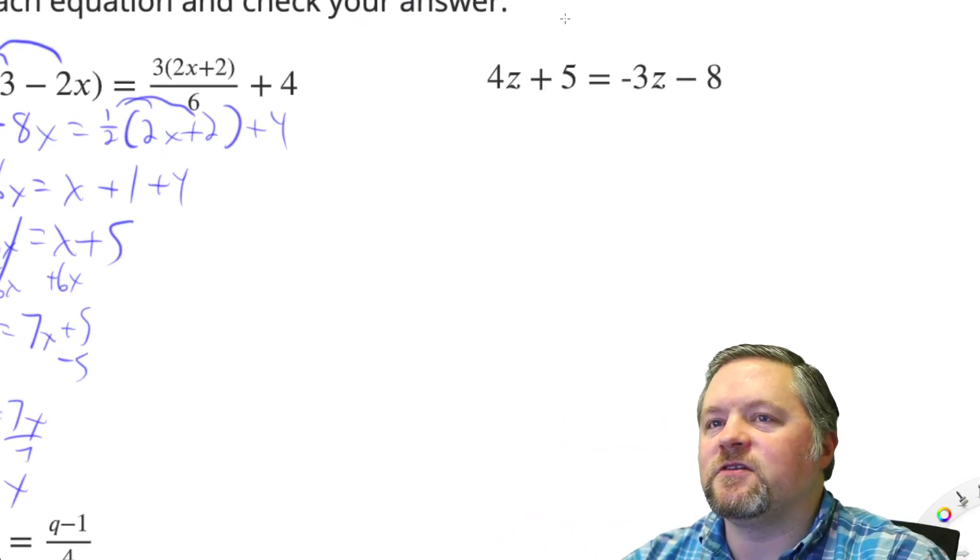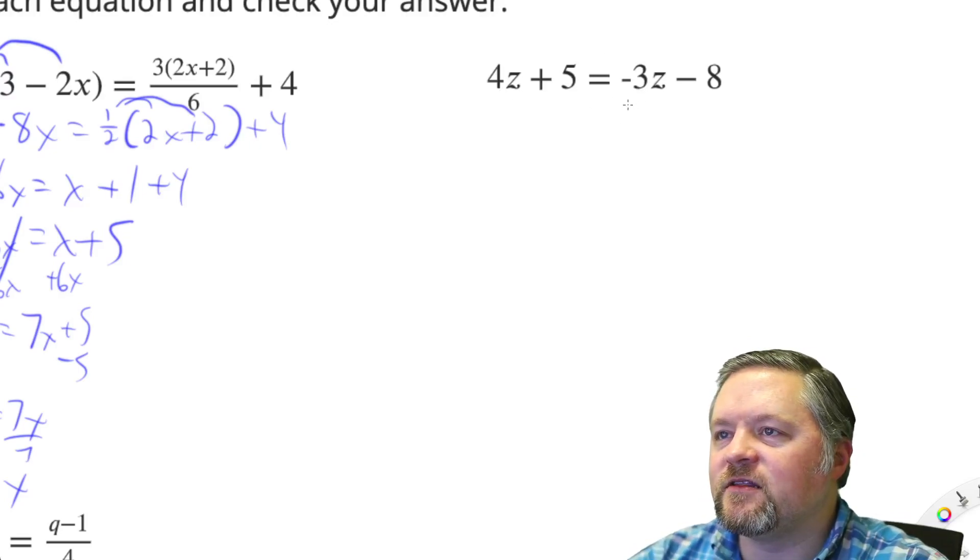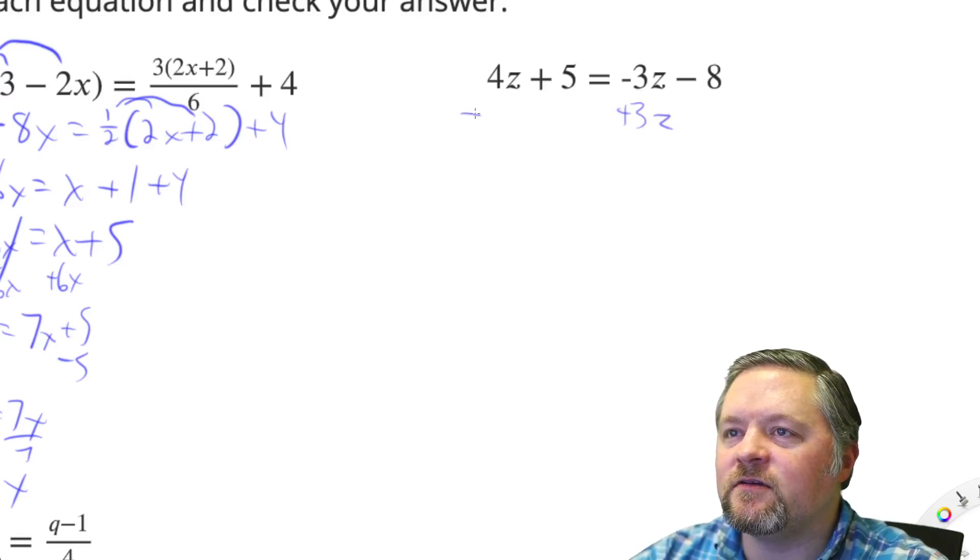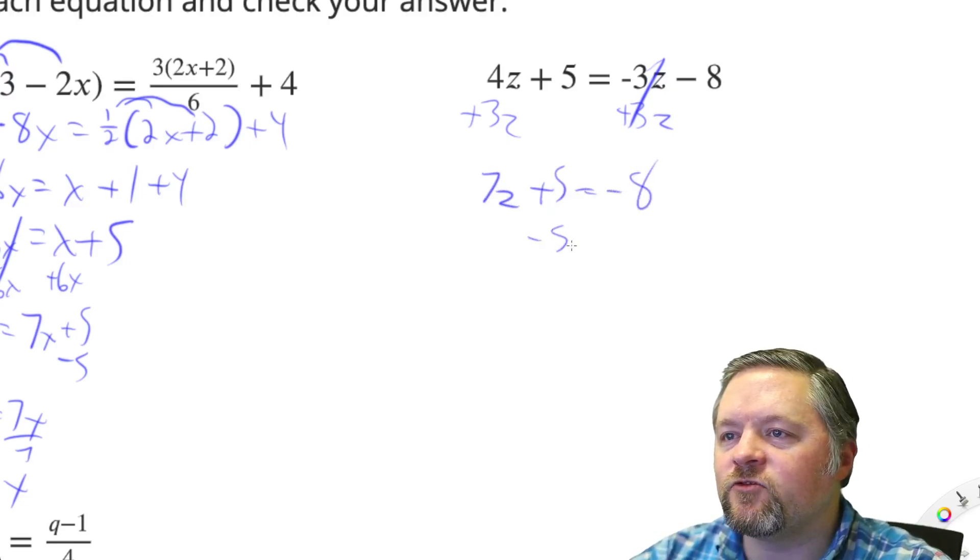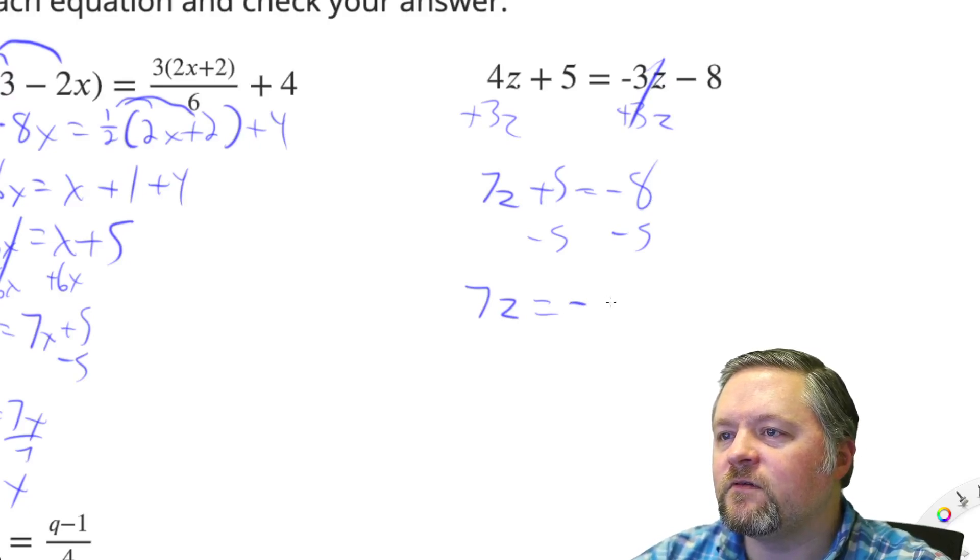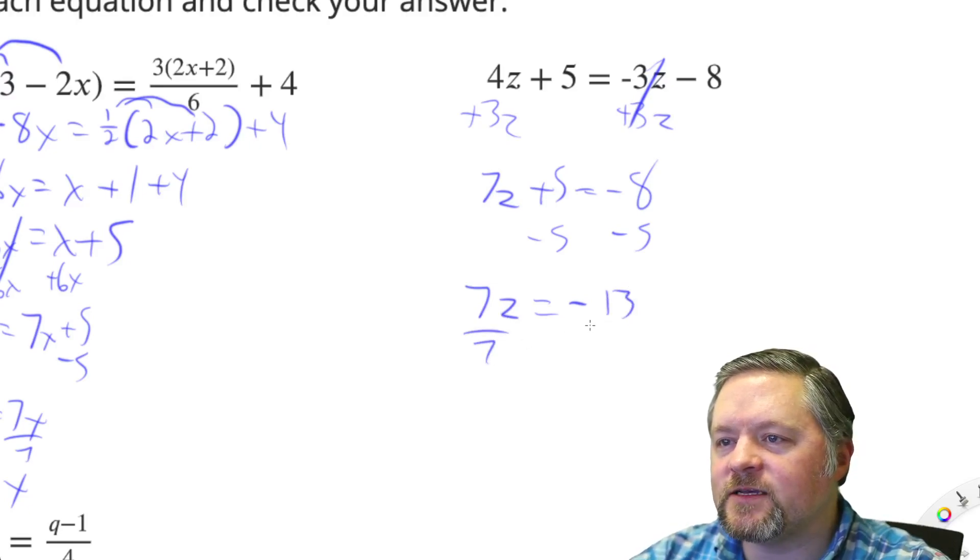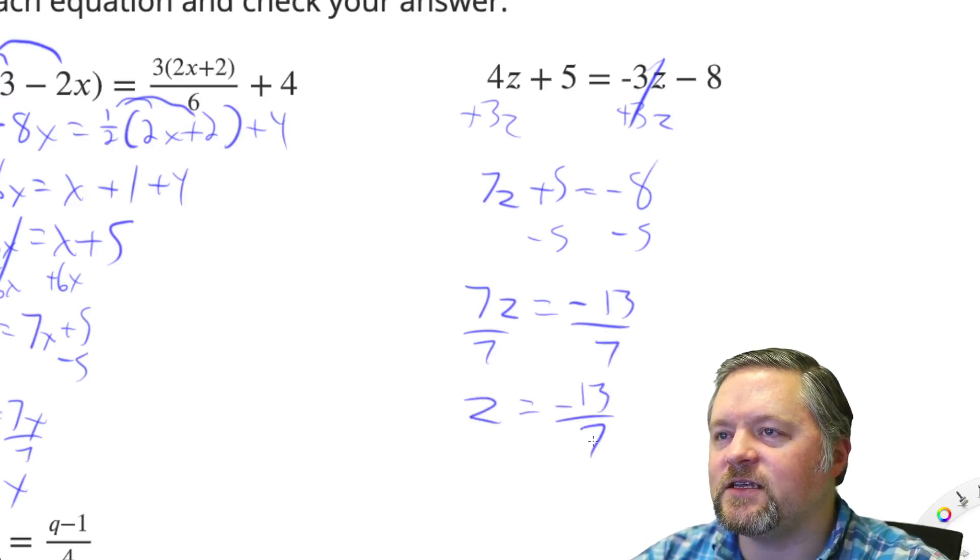This next one looks a little easier. Starting out with the tricky one. More z's on the left, so let's add 3z to each side. Those will cancel. 4 plus 3 is 7z plus 5 equals negative 8. Subtract 5. 7z equals negative 13. Divide each side by 7. Z equals negative 13 sevenths.